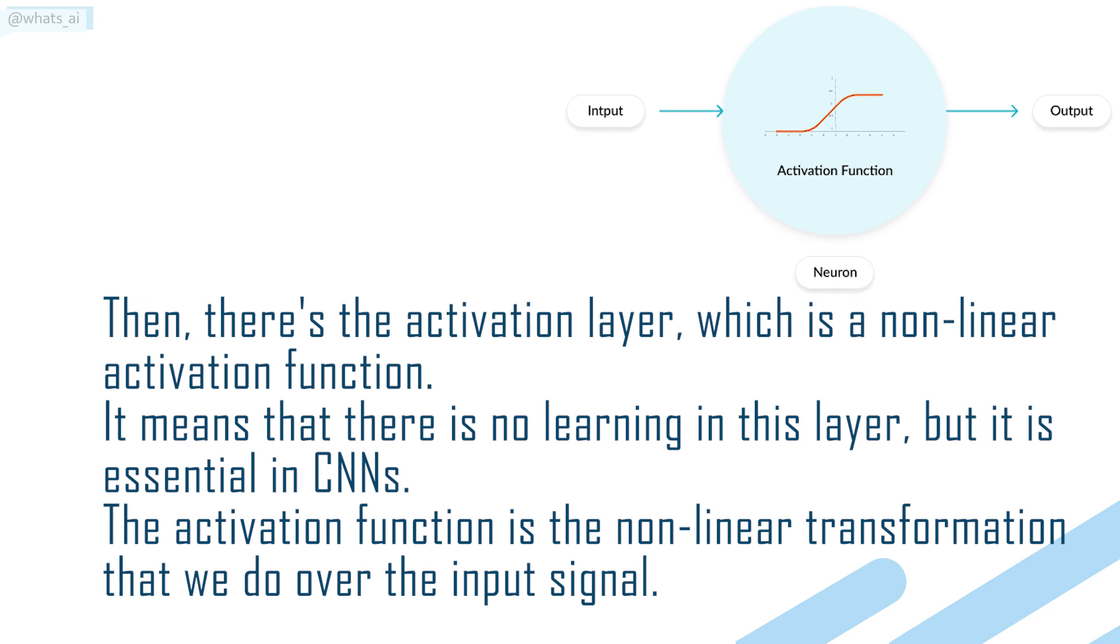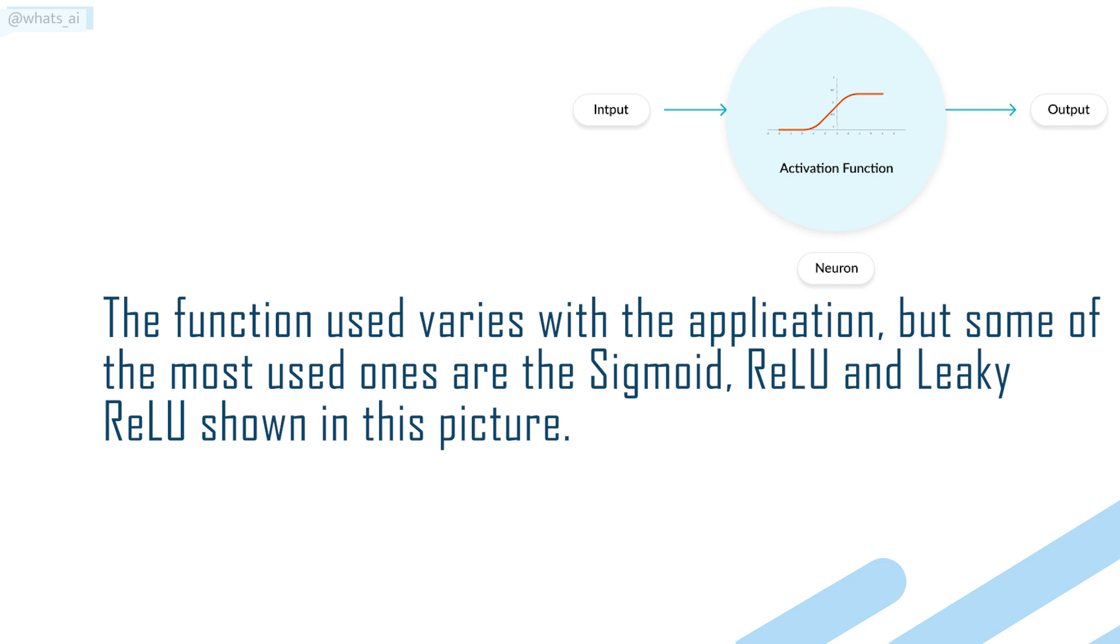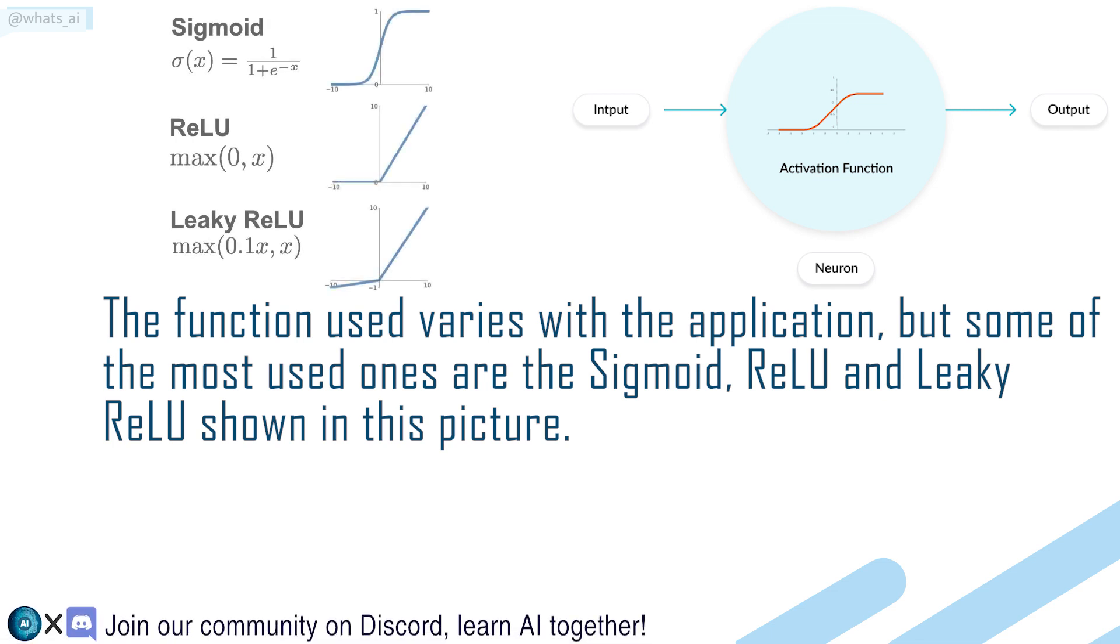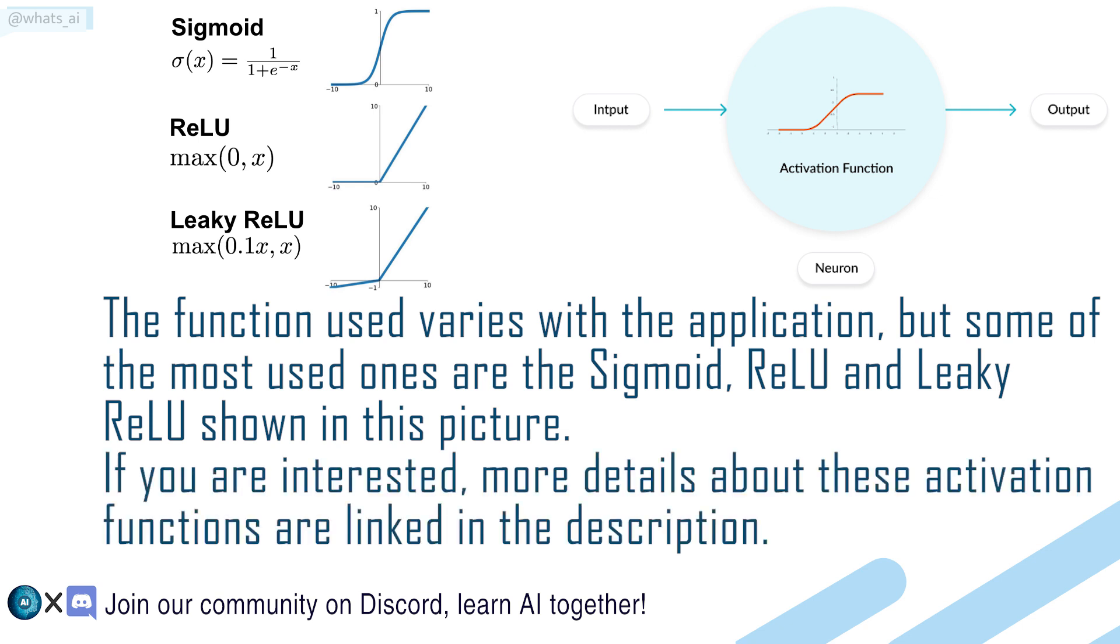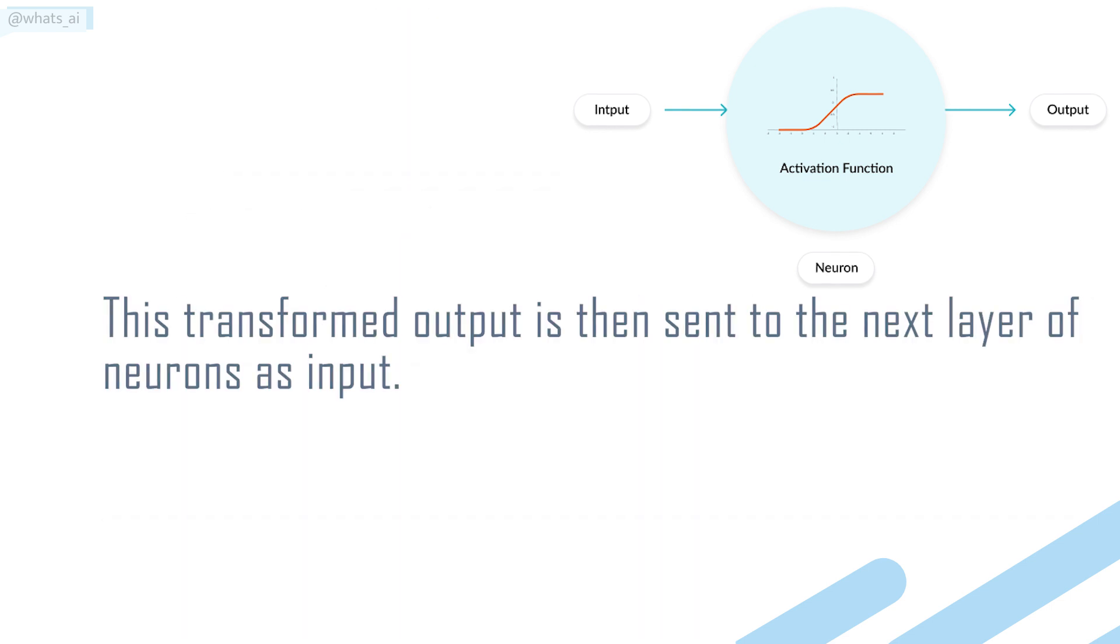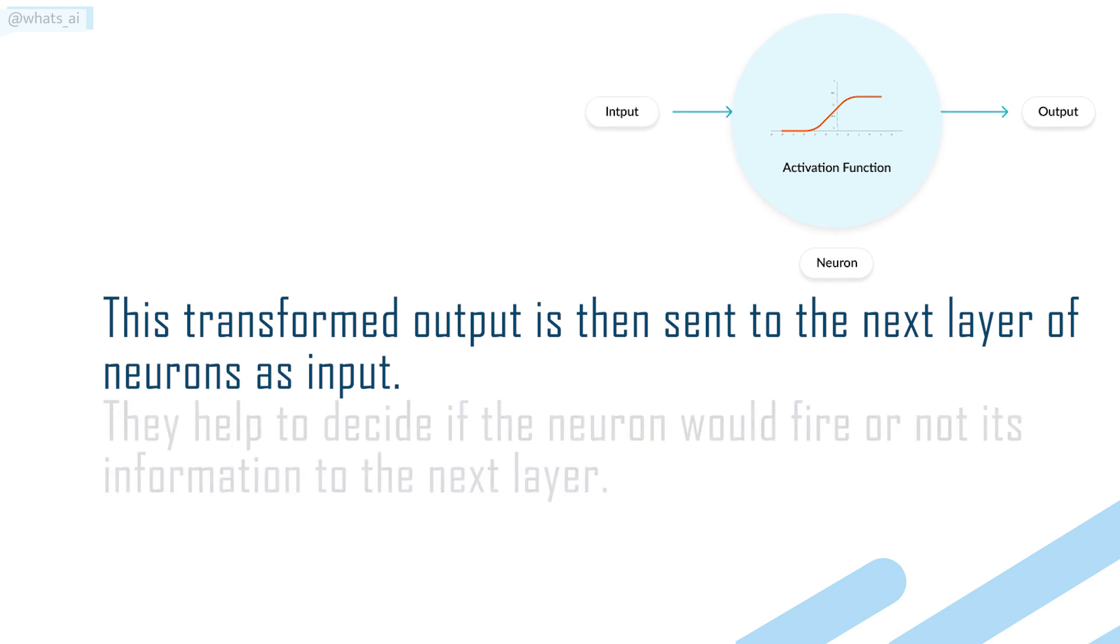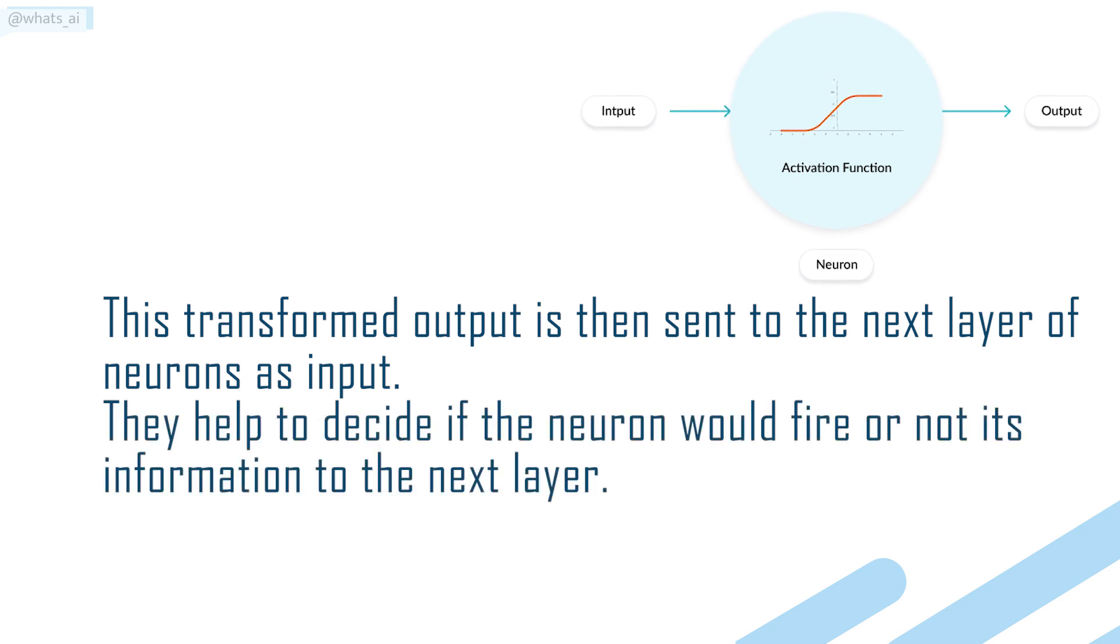The activation function is the non-linear transformation that we do over the input signal. The function used varies with the application, but some of the most common ones are the sigmoid, relu, and leaky relu shown in this picture. If you are interested, more details about these activation functions are linked in the description. This transformed output is then sent to the next layer of neurons as input. They help to decide if the neuron will fire or not its information to the next layer.